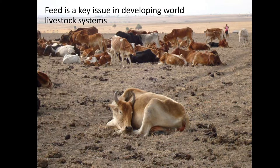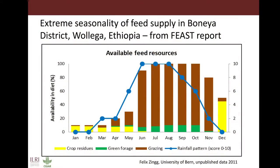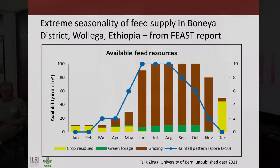We all know that feed is a key issue in developing world livestock systems. And we see this from the many FEAST reports that come through our hands. This is just one example of the extreme seasonality of feed supply — this is in Wanlika in Ethiopia.